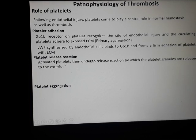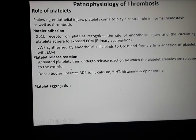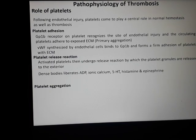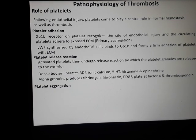When platelets are exposed to the sub-endothelial matrix, they are activated and undergo a release reaction in which platelet granules are released. Dense bodies liberate adenosine diphosphate (ADP) — a potent platelet aggregator — ionic calcium, which helps activate the coagulation system, and serotonin, histamine, and epinephrine. Alpha granules produce fibrinogen, fibronectin, platelet-derived growth factor (PDGF), platelet factor 4, and thrombospondin — factors required for the coagulation system.